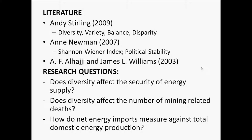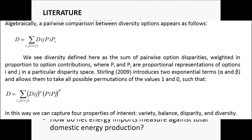Balance is a function of the apportionment of the energy system across identified options, and disparity is the manner and degree in which energy options may be distinguished. Diversity is defined as the sum of pairwise option disparities weighted in proportion to contributions, where p_i and p_j are proportional representations of options i and j in a particular disparity space. Sterling introduces two exponential terms alpha and beta, allowing them to take all permutations between values of one and zero, capturing four properties: variety, balance, disparity, and diversity.